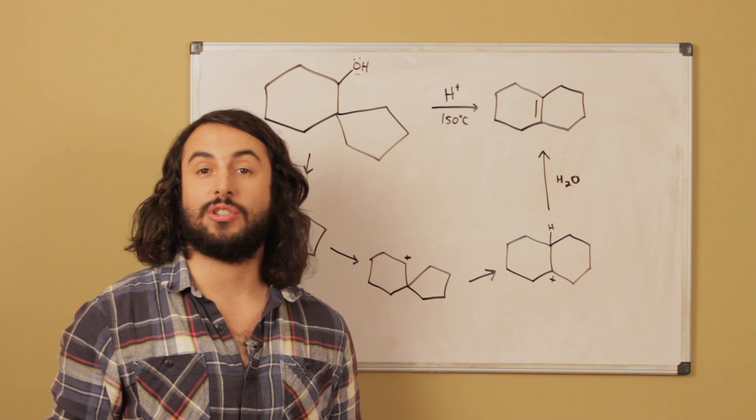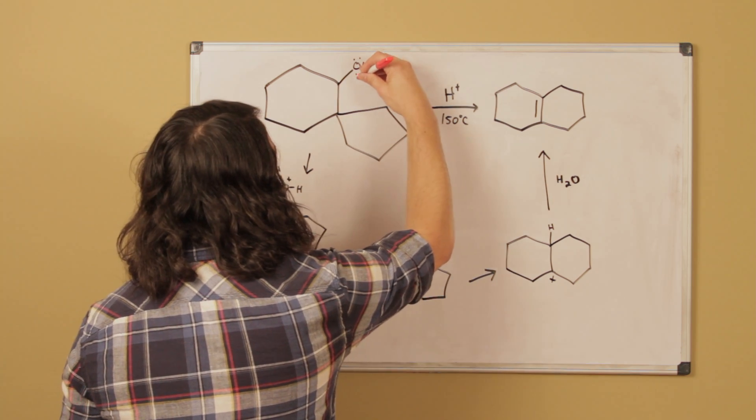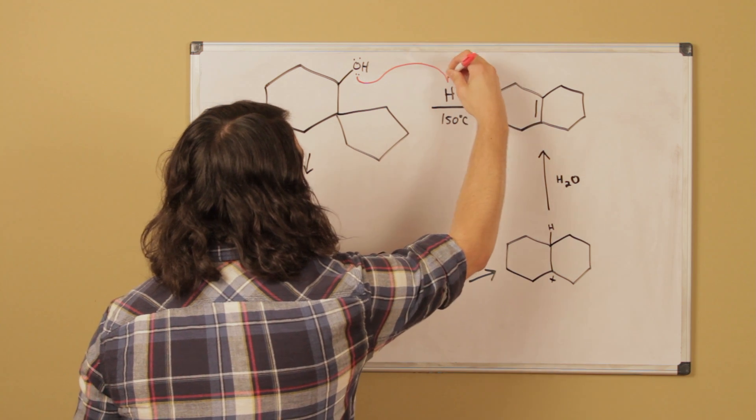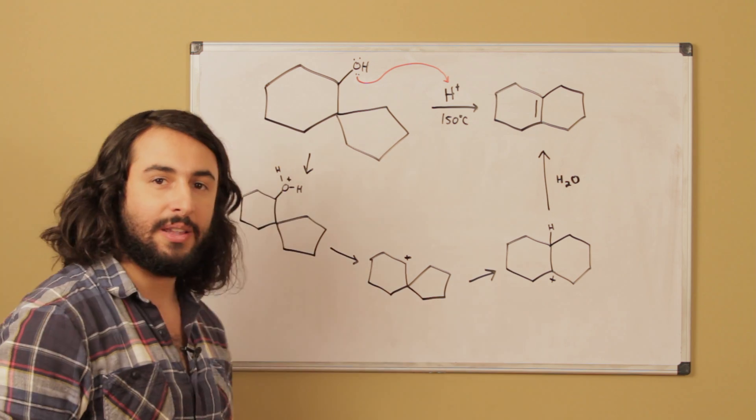We want to look at the substrate and say where's the proton going to go. Well, once again the only thing here that's going to work - we have a lone pair on oxygen, that's the only thing that can accommodate a proton. So that is going to get protonated and now we have basically a water molecule right here.